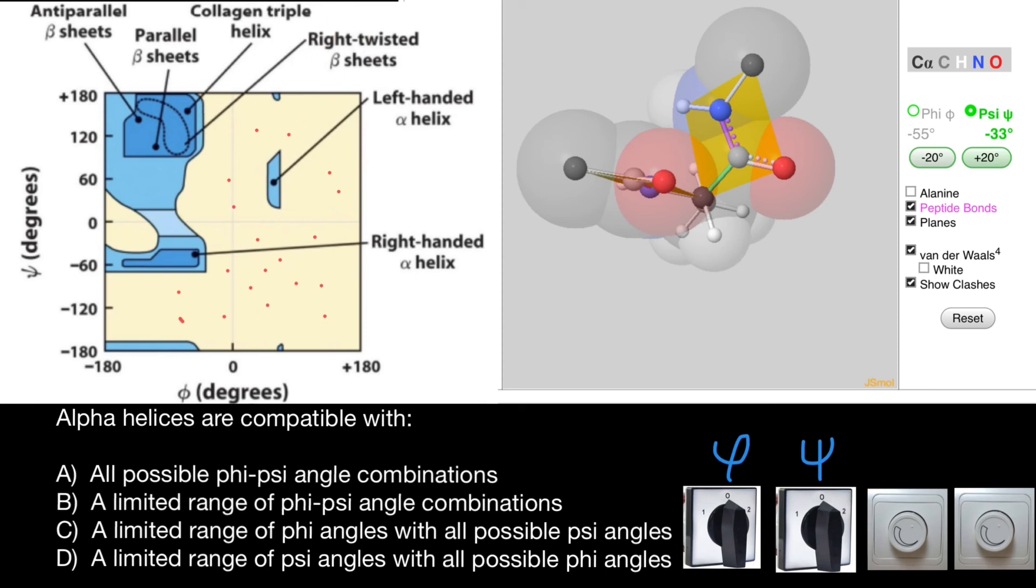Or right-twisted beta sheets, or collagen helix, and so on. This is very important for computational biology, for bioinformatics, in order to predict how polypeptide chain would fold. So now let's check our answers.